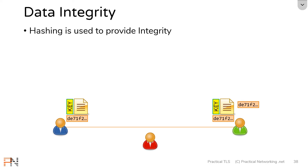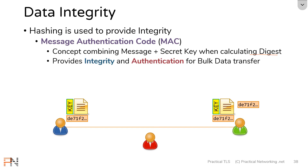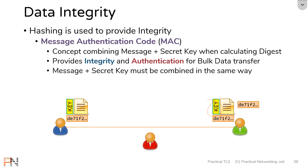This concept that we just discussed is known as a message authentication code. It is the idea of combining both a message and a secret key when calculating the digest, for the purpose of acquiring integrity and authentication for bulk data sent across the wire. Now, there's one thing we have to understand about MACs: not only do both parties have to establish the same key, they also have to agree upon a specific way of combining the message with the key to get the same digest.